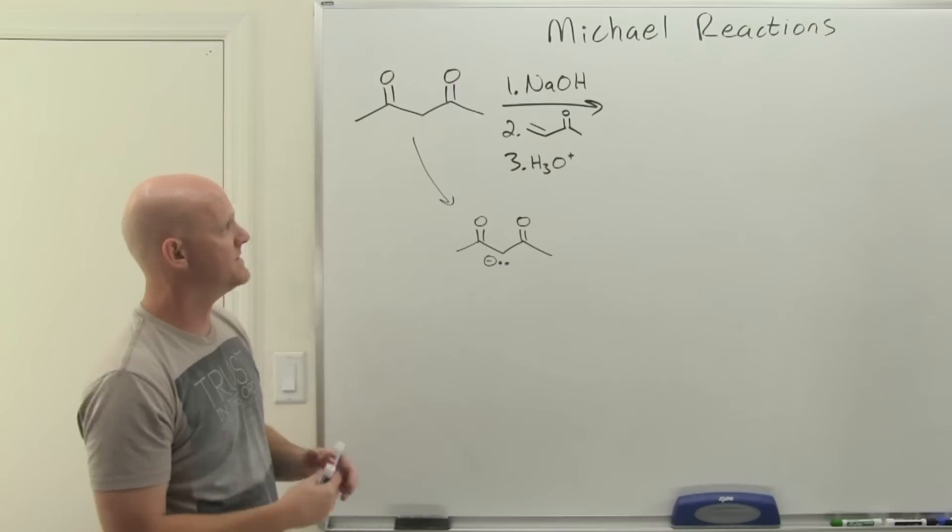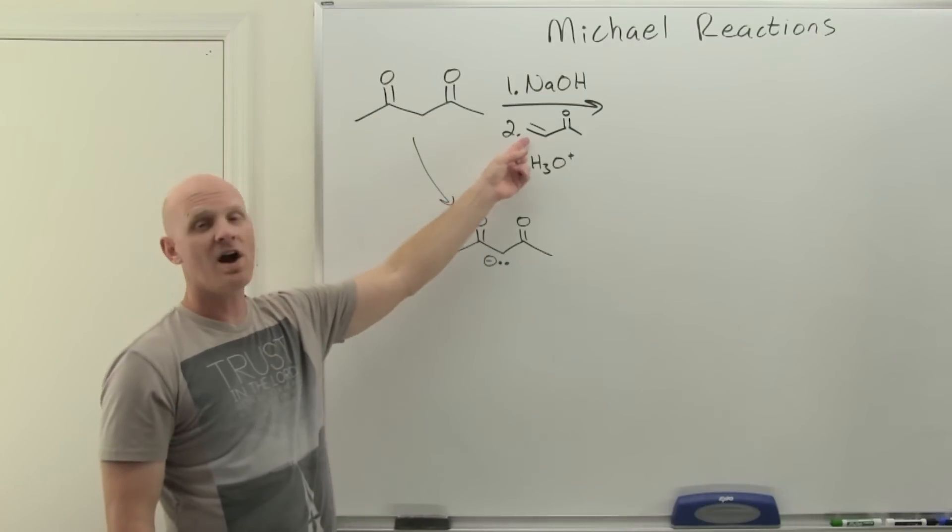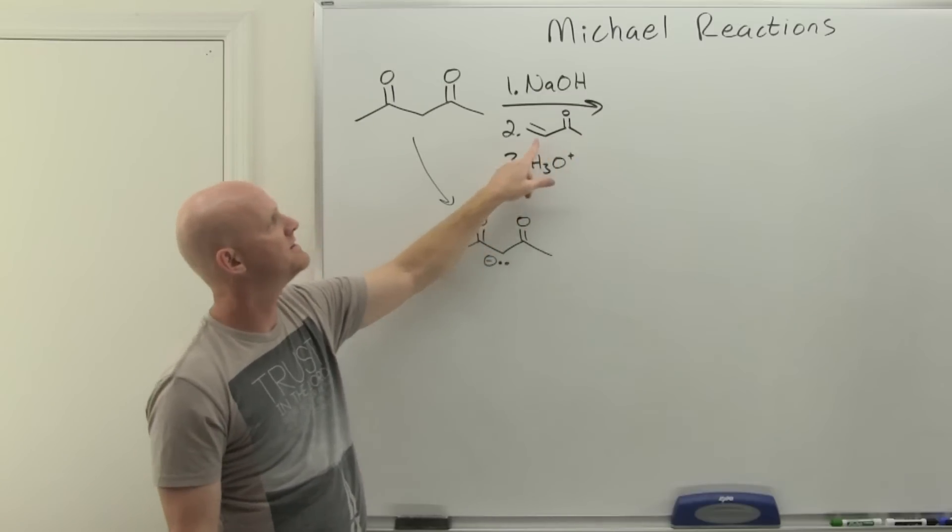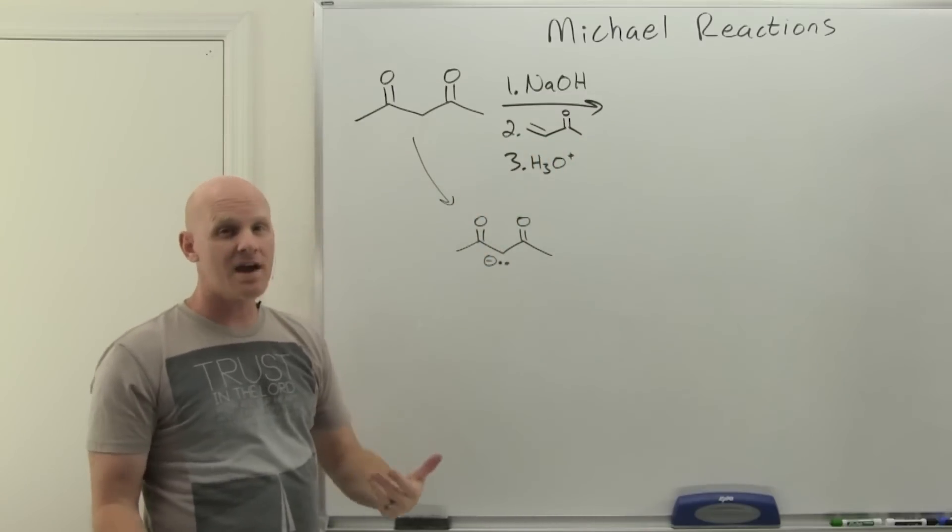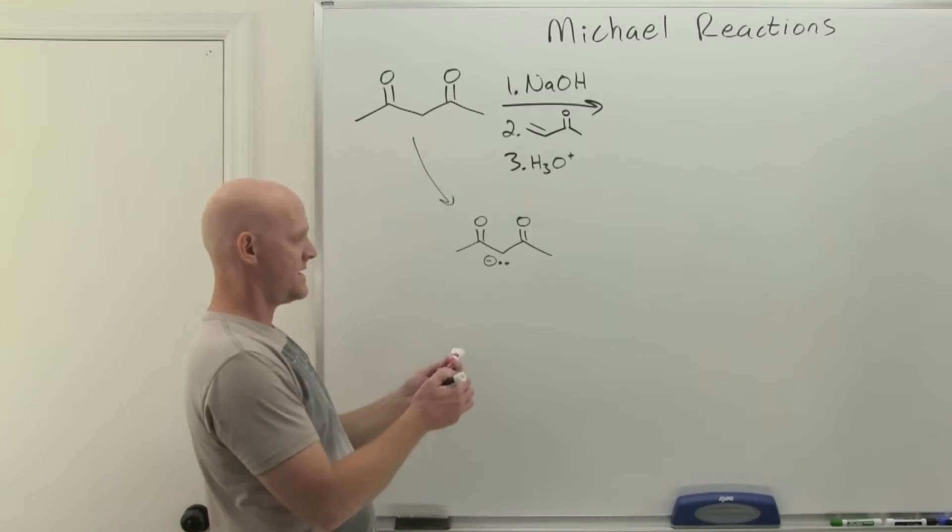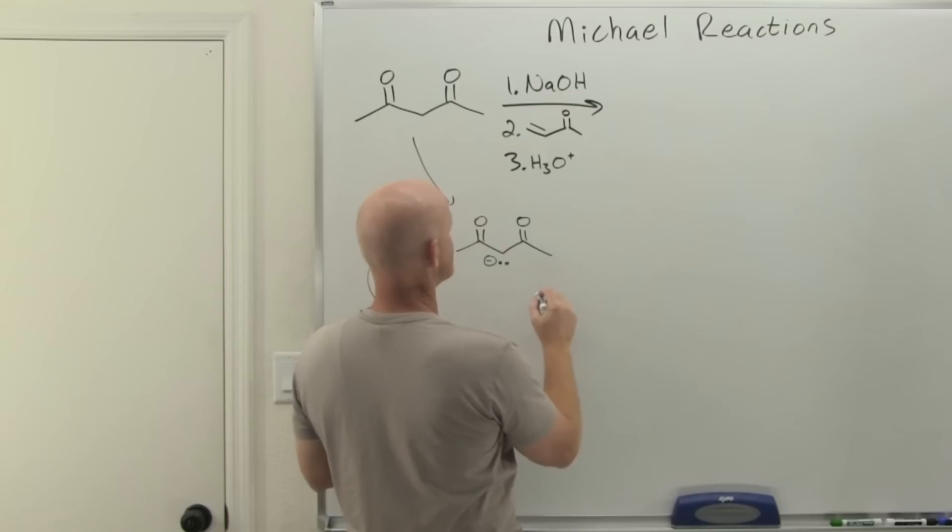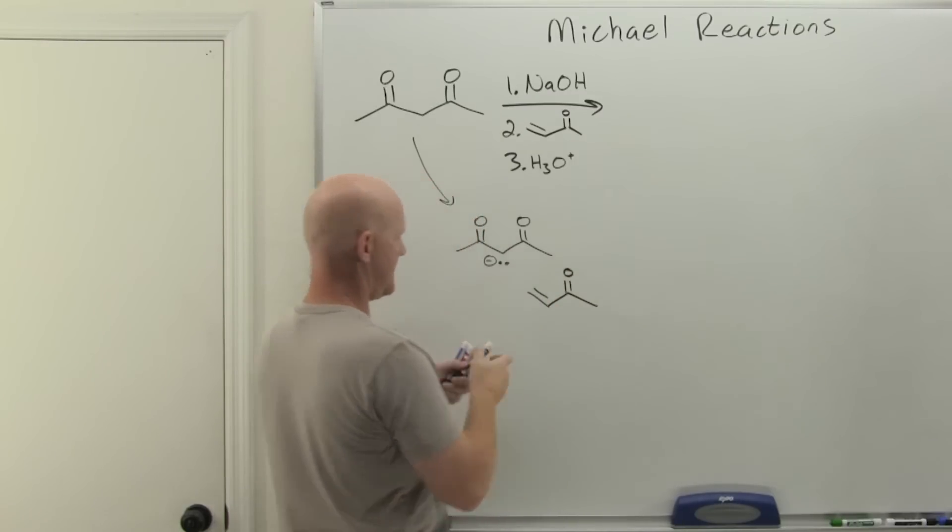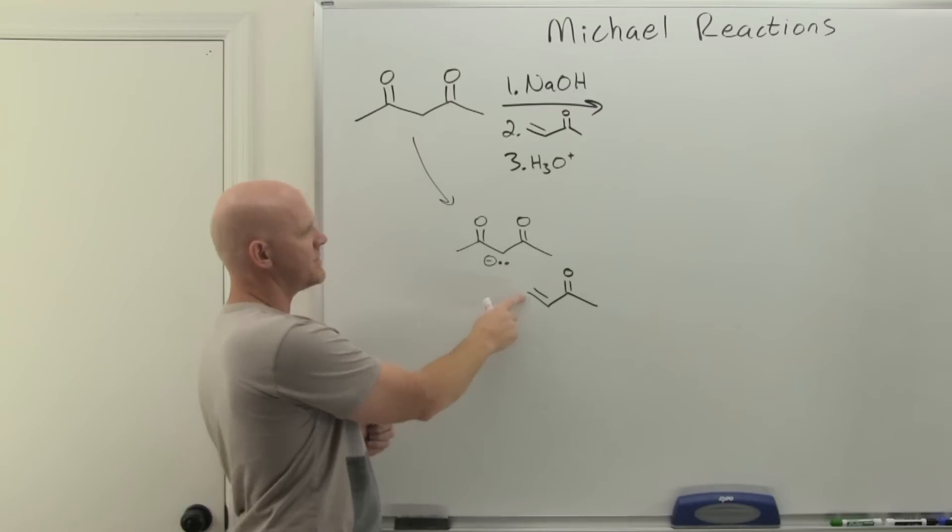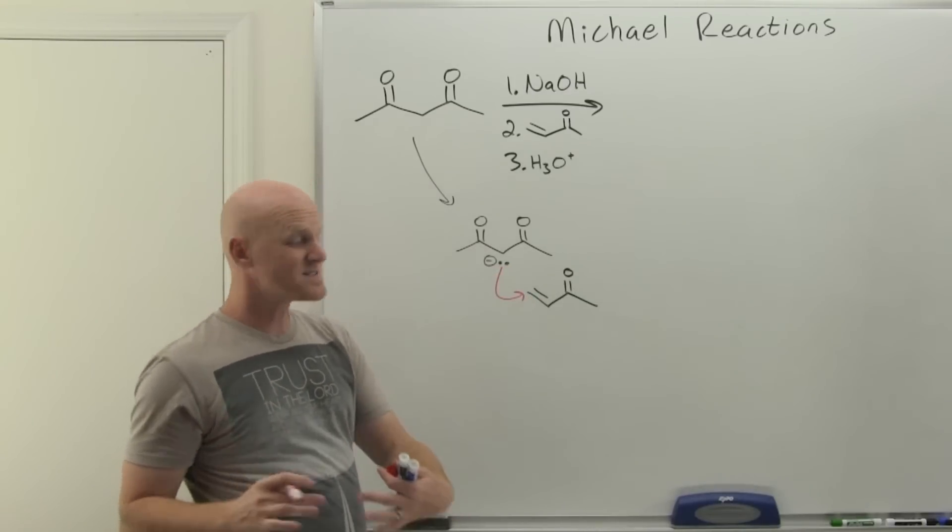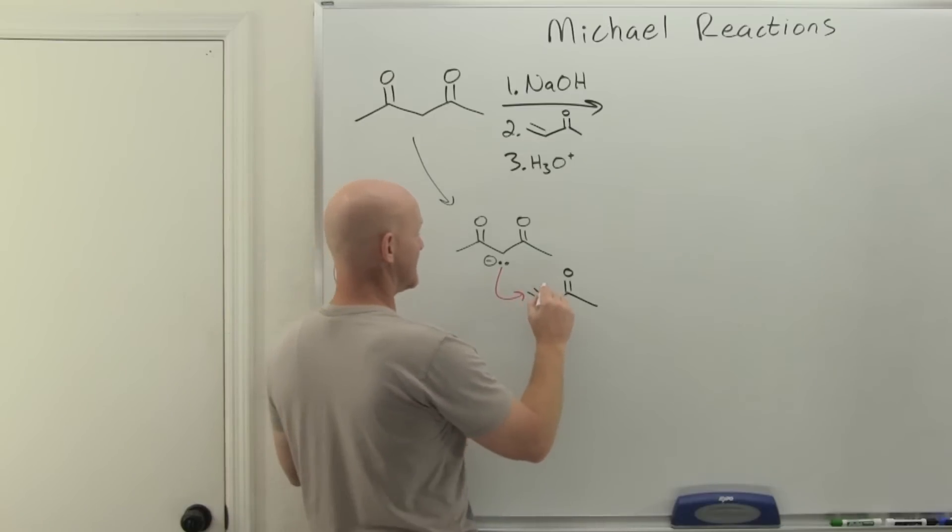So the first step in this reaction is going to form that enolate resonance stabilized with both oxygens. I'm just going to draw this minor resonance contributor, but that is the one that reflects the nucleophilicity of that alpha carbon. Second step, we're adding a conjugated ketone, and this is the most common conjugated ketone—we often call it methyl vinyl ketone or MVK for short. It's so commonly used it gets its own acronym.